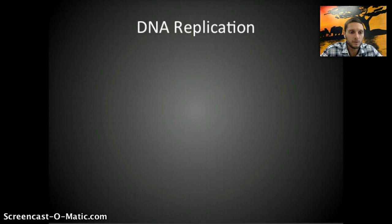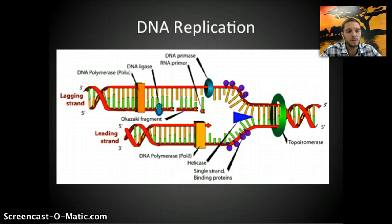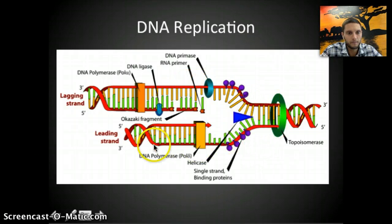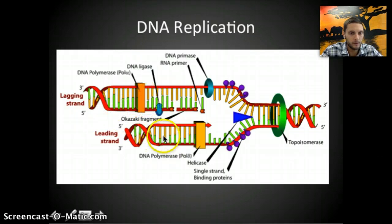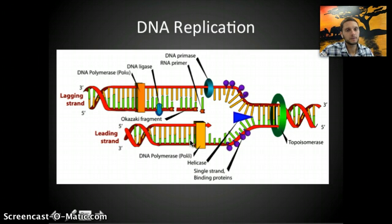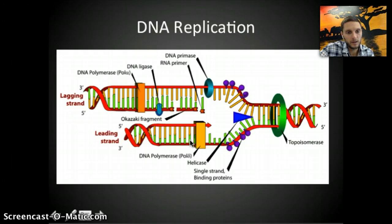Here we have an original parent or template strand, and new building DNA strands shown in green. What's happening first is the DNA is unwinding. An enzyme called helicase helps to unwind the double helix and separates the two strands by breaking the hydrogen bonds. Remember from the DNA structure discussion — hydrogen bonds hold the two strands together, and helicase helps to break those.